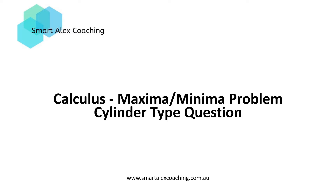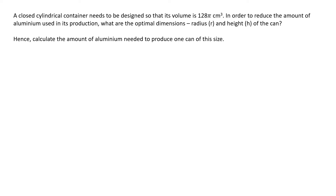But without further wait, let's get started. Here is a typical calculus question students often encounter in an exam. A closed cylindrical container needs to be designed so that its volume is 128π cm³. In order to reduce the amount of aluminium used in its production, what are the optimal dimensions — radius r and height h — of the can? Hence calculate the amount of aluminium needed to produce one can of this size.